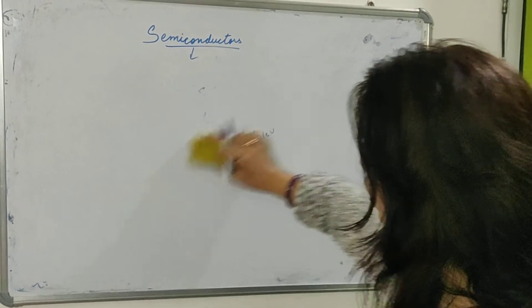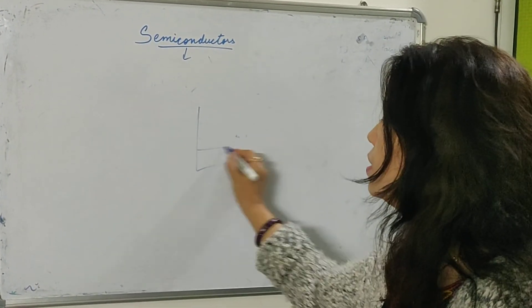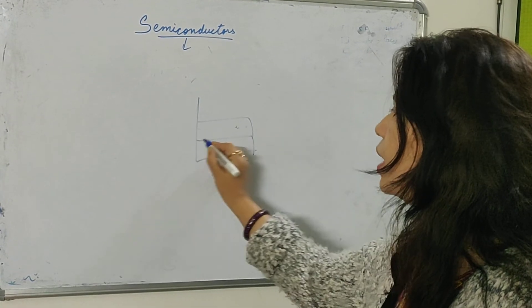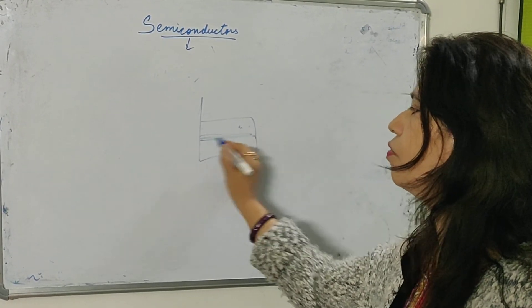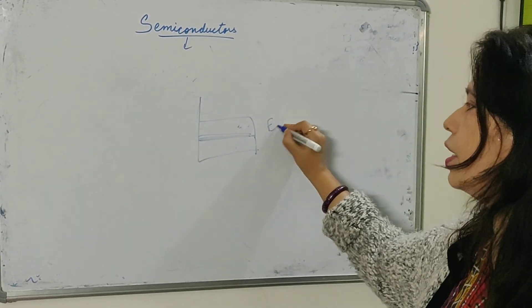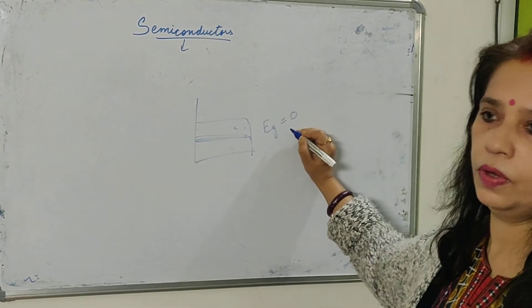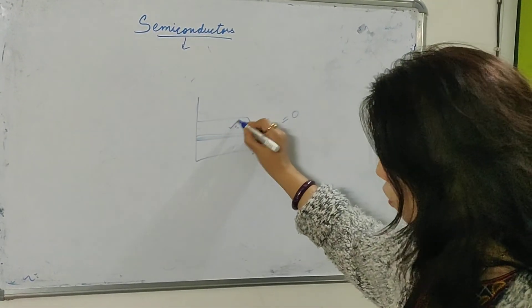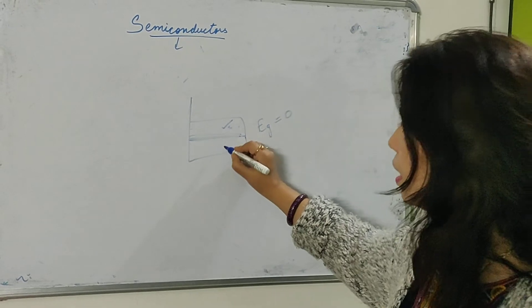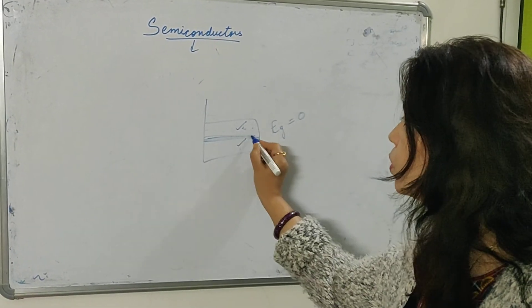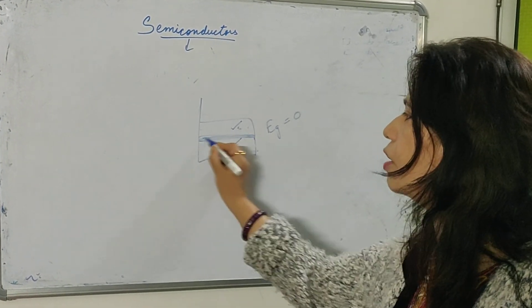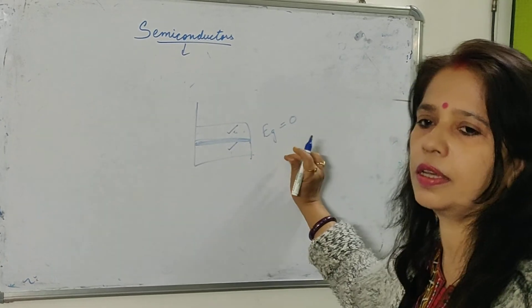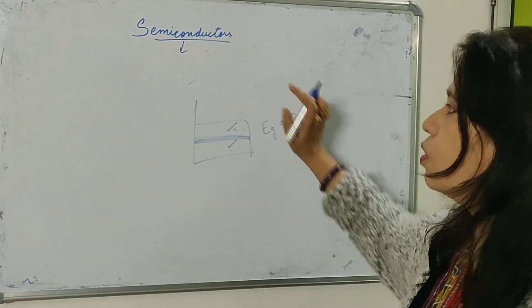Now, talking about the conductors. In conductors, valence band and conduction band, they overlap with each other. That means, that means energy gap is 0. The electrons present in conduction band and the valence band, both overlap. So, they are totally participating in the conduction of electricity.